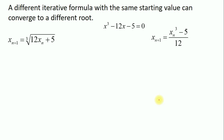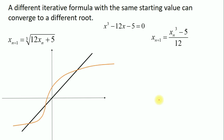I am going to show you the visual representation of how the same starting value will lead you to a different root. As you can see in this graph, the black line is y = x and the red line is y = cube root of (12x + 5).